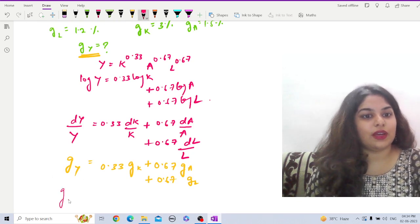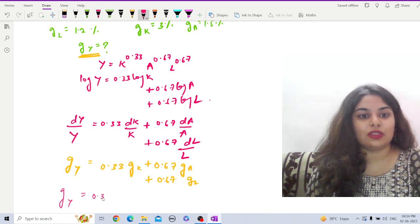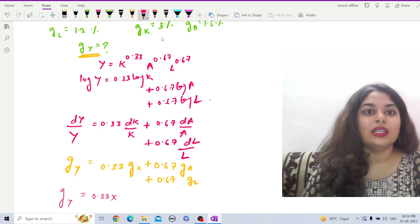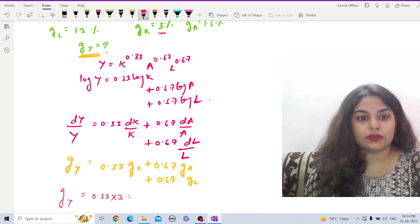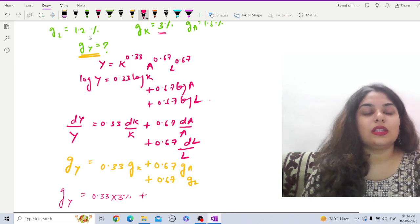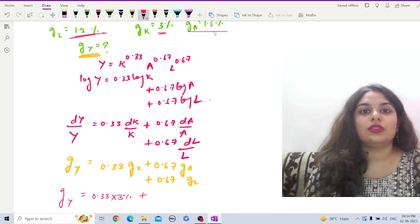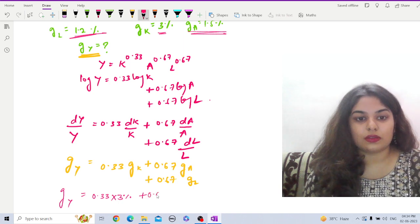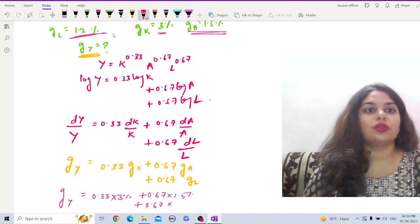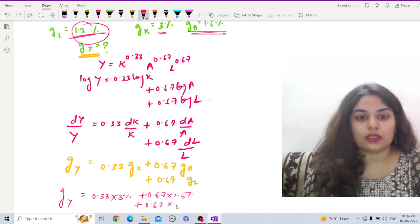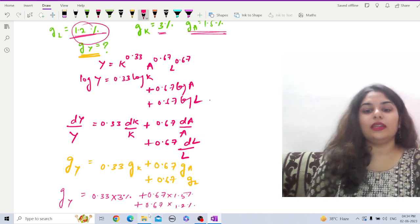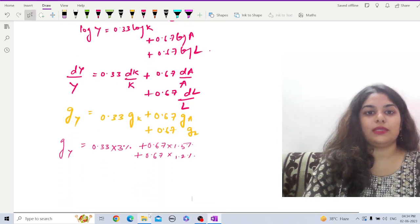Now let us put the values, the percentage values here. We have to find out gY equals 0.33 times gK is 3% plus 0.67 times gA is 1.5% plus 0.67 times gL is 1.2%.